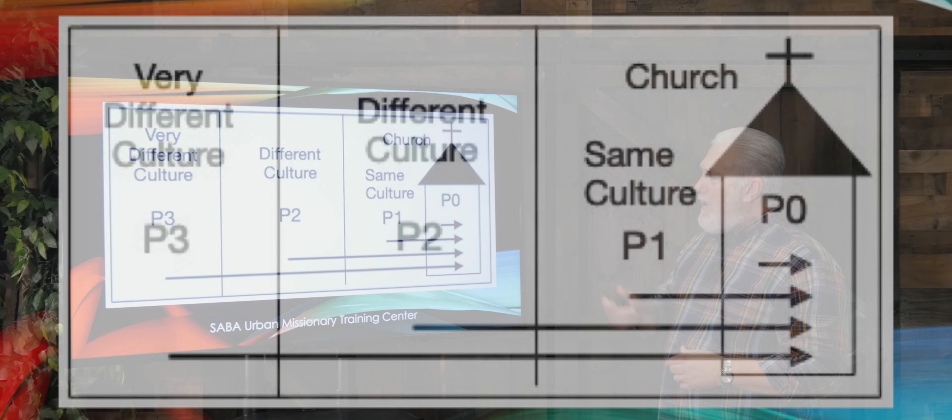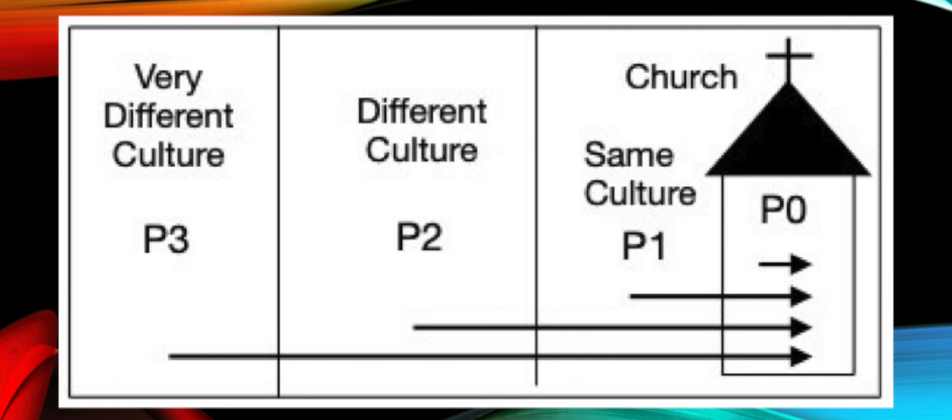Obviously, you have the church on the far right. It's P-0, same culture; P-1, different culture; P-2; and P-3, which is very different culture.